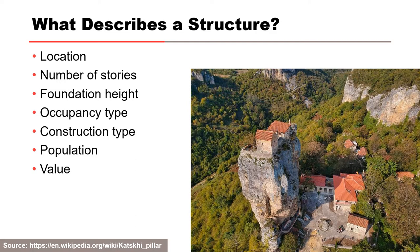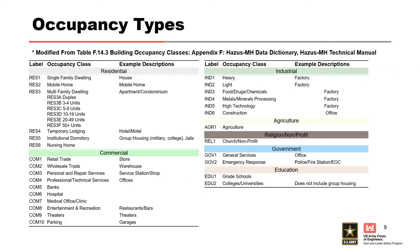Value — the value of the structure. When talking about value, generally we're looking at the depreciated replacement value: how much is it going to cost to replace that structure if it is damaged? I want to focus on occupancy types because everything else is pretty self-explanatory. Occupancy types are a little more nuanced — there's a bit more going on there.